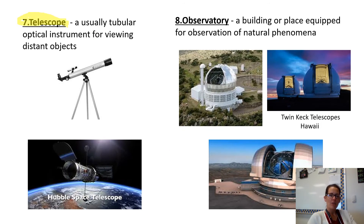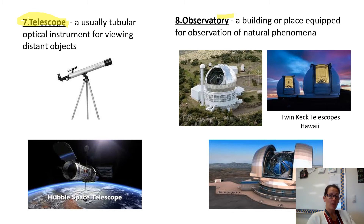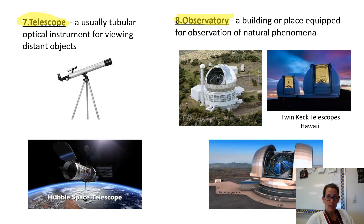Next on our list is telescope — usually a tubular optical instrument used for viewing distant objects like the stars or planets we see at night. Next we have observatory — a building or place equipped for observing natural phenomena. There's an observatory at A&M Commerce; I didn't get to go to it because it was shut down when I was there, but I would really like to visit it.